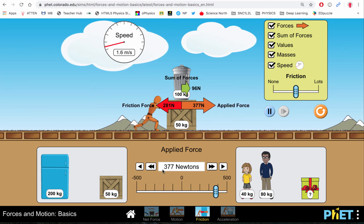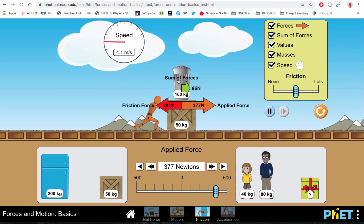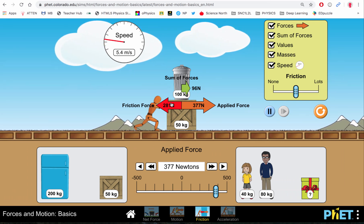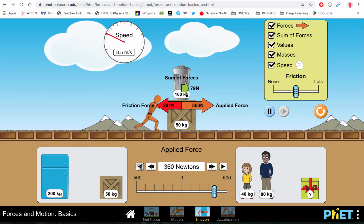And right there we just overcame the static friction, so we have a net force now of 96 Newtons and we're obviously accelerating. My frictional force is 281, so I'm just going to decrease this until we get down to an applied force of 281, and when that happens our acceleration will stop.